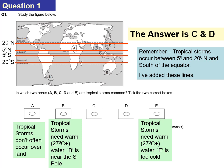Tropical storms need warm water, so E is way out of the 5 to 20 degrees north and south of the equator and will be too cold. C and D is the correct answer because those are near the equator, between 5 and 20 degrees north and south.